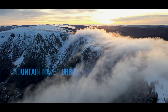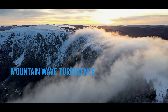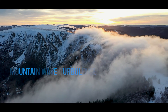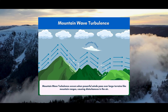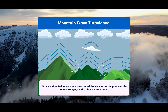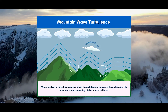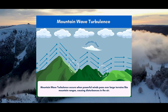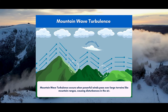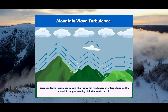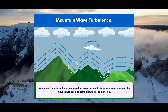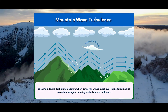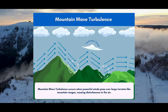Air flowing over the tops of mountains can travel down the leeward side, causing a flow to form with strong air current waves changing at all altitudes. This is called mountain wave turbulence and can extend for hundreds of miles downwind of a mountain range.